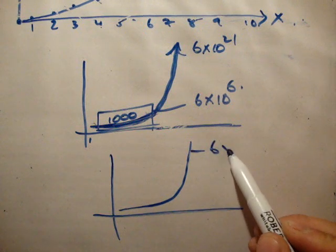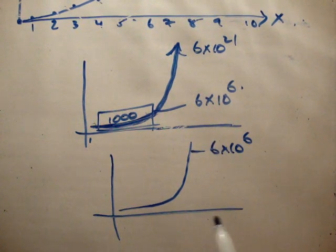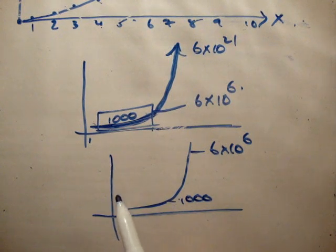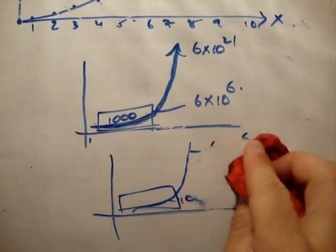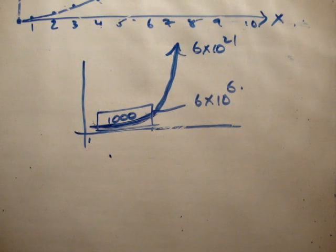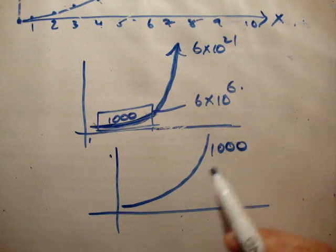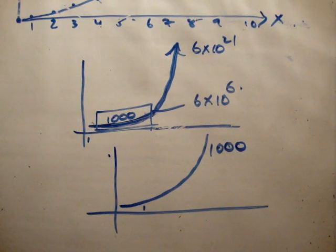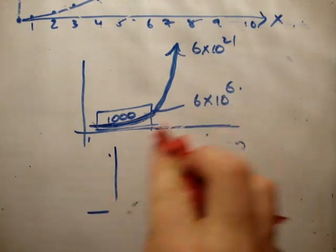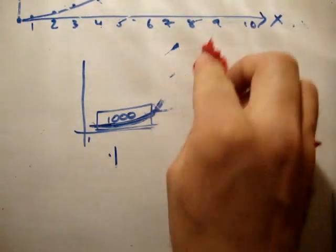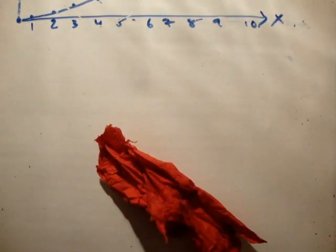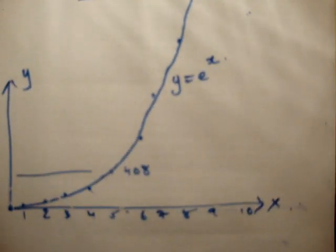Now while that is small in comparison to this, this could be easily 6 times 10 to the 21. This here might be 6 times 10 to the 6, so that's a million. And down here we might have a thousand. So if I zoom into this area here, what are we going to have? We're going to have the exact same thing. We're going to have another exponential curve. So the point is, exponential growth is obviously not a good thing. That means the growth is on an uncontrolled increase. Similarly, exponential decay is usually a bad thing.